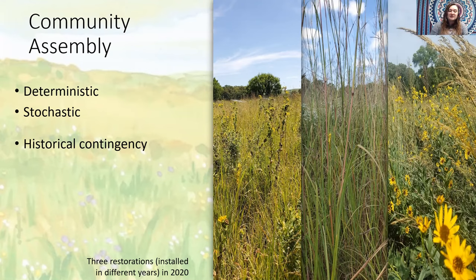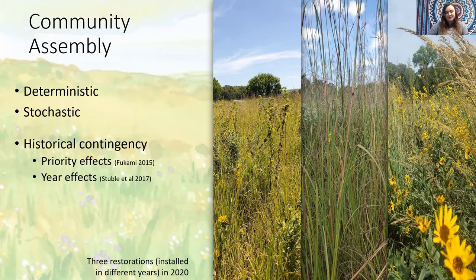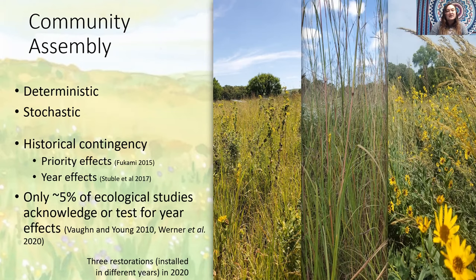There can be historical contingencies in community assembly, where the order and timing of events can affect assembly, and those events can be biotic or abiotic. Biotic events include priority effects, where the order of arrival and establishment of species can create a historical contingency dependent upon what species arrived first. Year effects can also create a historical contingency based on environmental factors that vary year to year, such as precipitation and temperature. Based on large variation in environmental conditions in different years, there can be large year effects on community composition, yet only 5% of ecological studies specifically acknowledge or test for year effects.